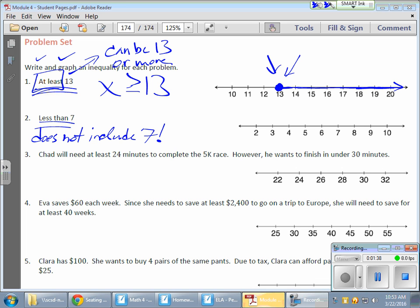If it's simply less than seven, I'm not going to include seven. So as far as my inequality is concerned, my variable is going to be less than seven. Notice I'm not including the equal part of that symbol because it does not include seven - it's simply less than seven. Now on my graph, how we show that is not by filling in.